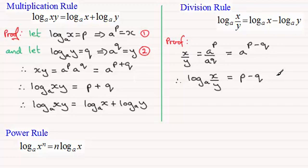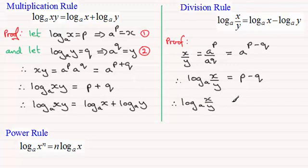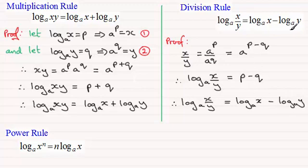And we can see that p, just as before, is the log of x in base a and q is the log of y in base a. So therefore what we've got is the log of x divided by y in base a is equal to the log of x in base a minus the log of y in base a, and that proves that result.